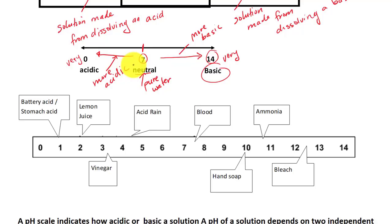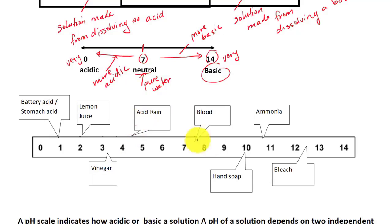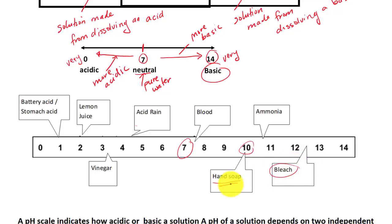Let's look at some examples from daily life. Stomach acid has the same pH as battery acid. Then we have lemon juice, vinegar, and acid rain. Past the neutral value of pure water, we have blood, which is a little bit basic. Then soap is at a pH of 10. And bleach, which is a cleaning agent, has a pH between 12 and 13. That is the pH scale.